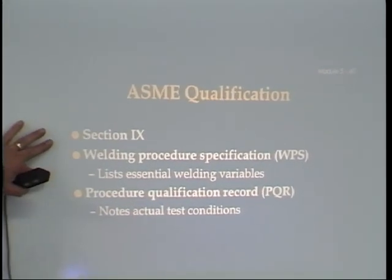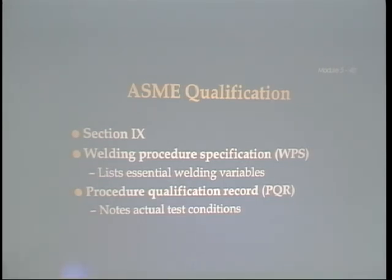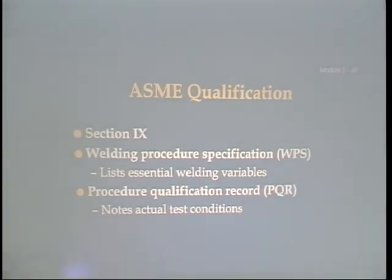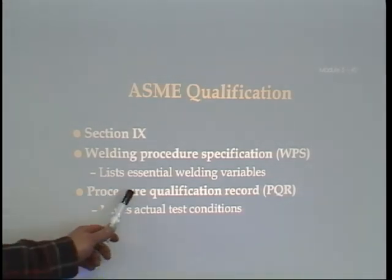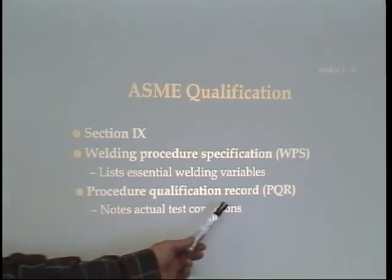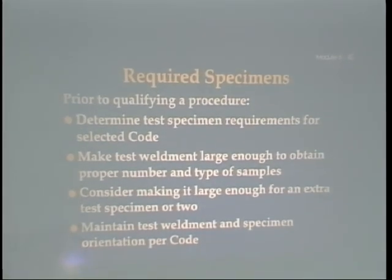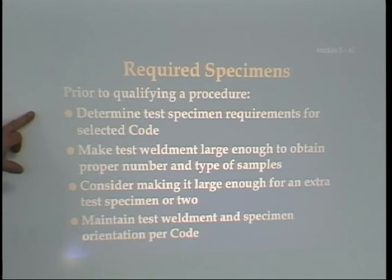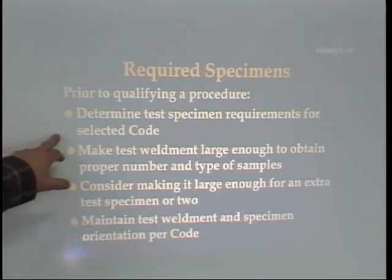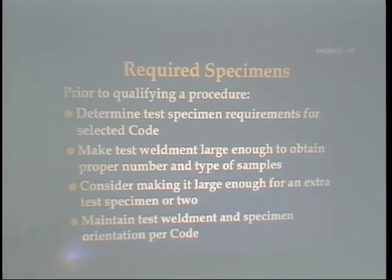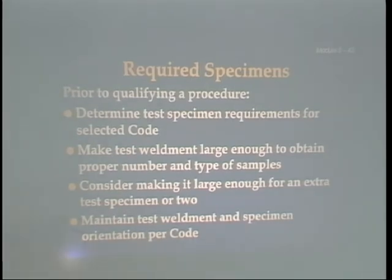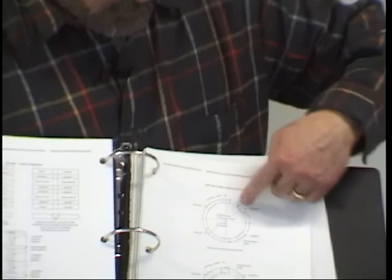ASME qualification is done to Section 9. You need welding procedure specifications (WPS), which list the essential welding variables. To get to the WPS, we need the PQR (procedure qualification record), which notes the actual test conditions. Prior to qualifying a procedure, determine test specimen requirements for the selected code. Your textbook shows views of where to remove specimens — plate specimens for reduced section tensile pulls, or pipe specimens at 45 to 60 degrees for face bends and root bends.